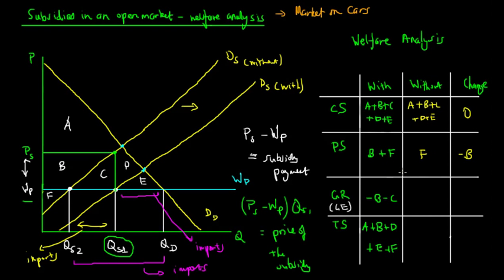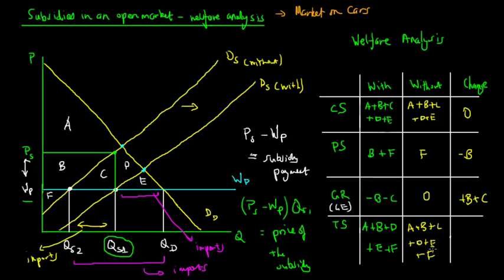Without the subsidy, the government no longer pays subsidies, so their change is +B + C. Adding up the changes: consumer surplus change is zero, producer surplus change is −B, government expenditure change is +B + C. The net change in total surplus is +C. So we have actually gained efficiency — represented by the shaded pink area C.